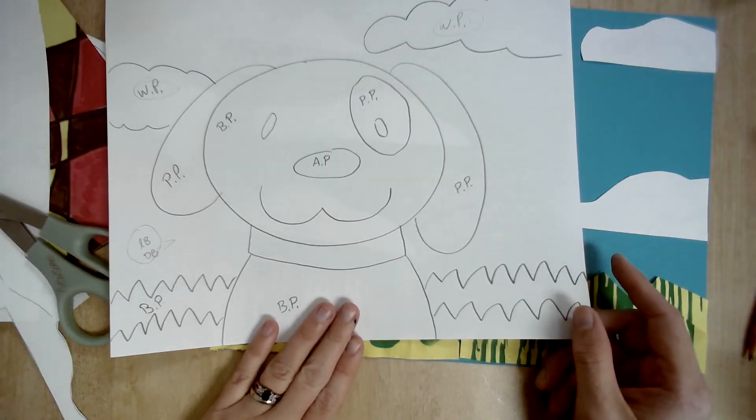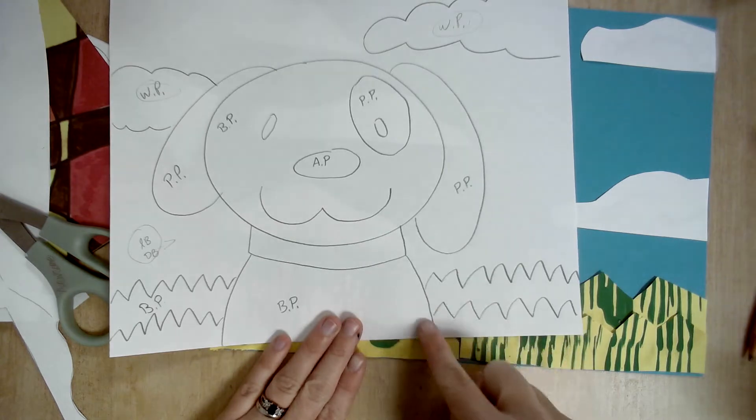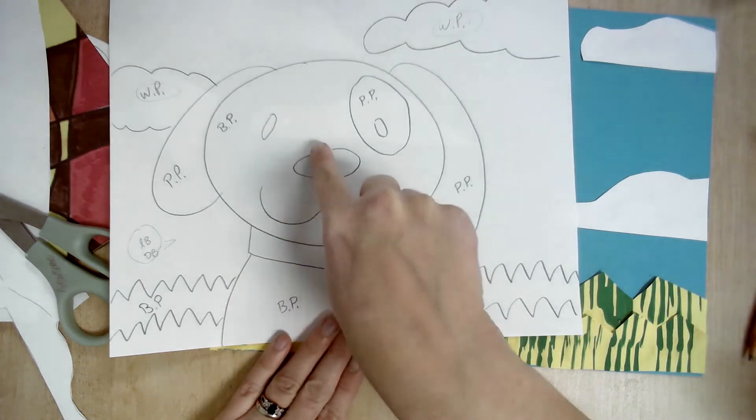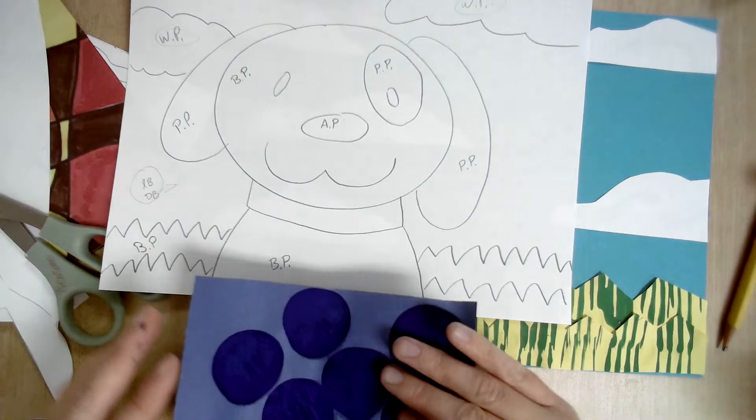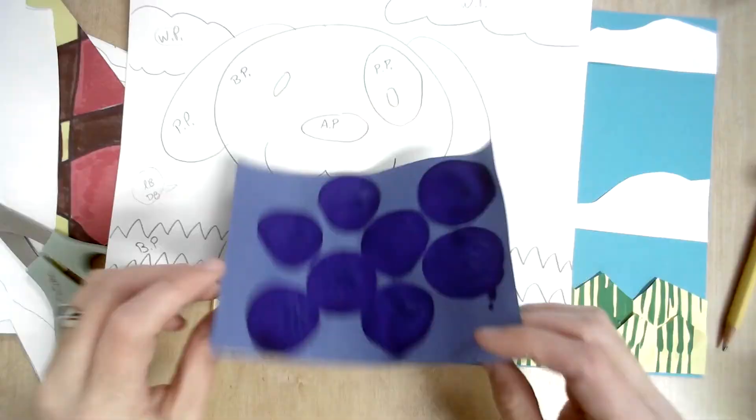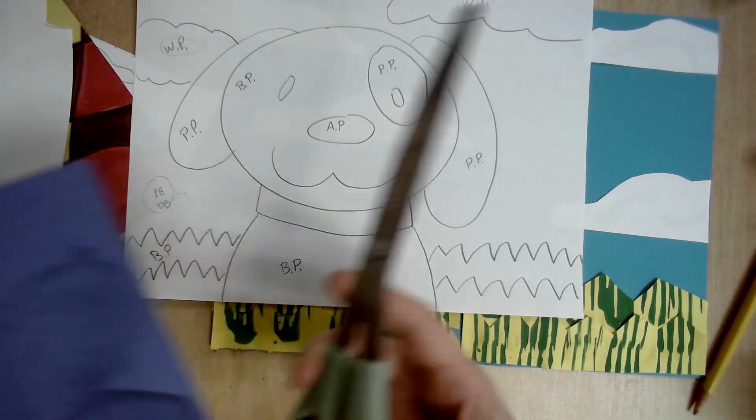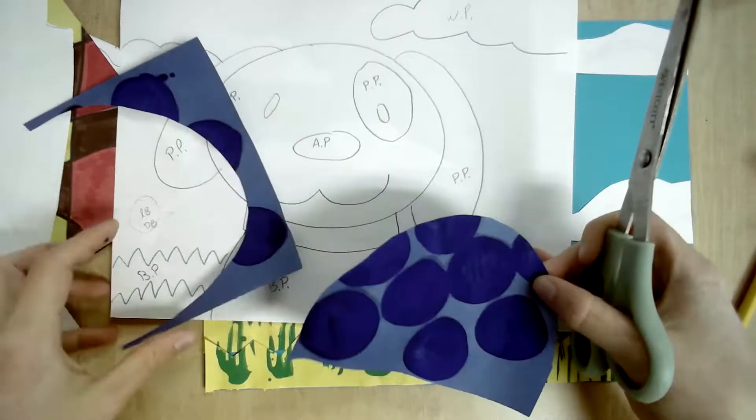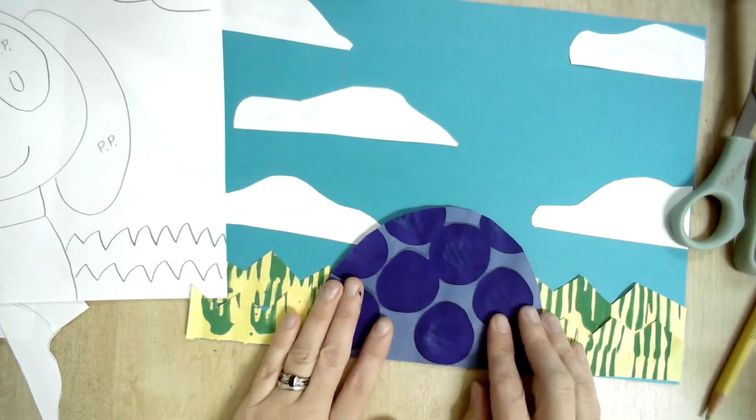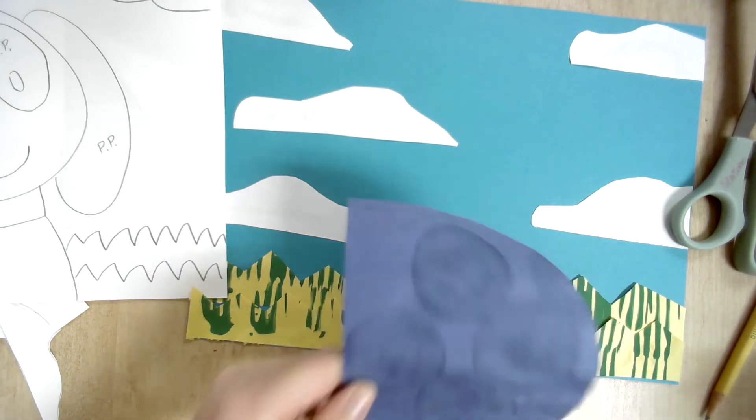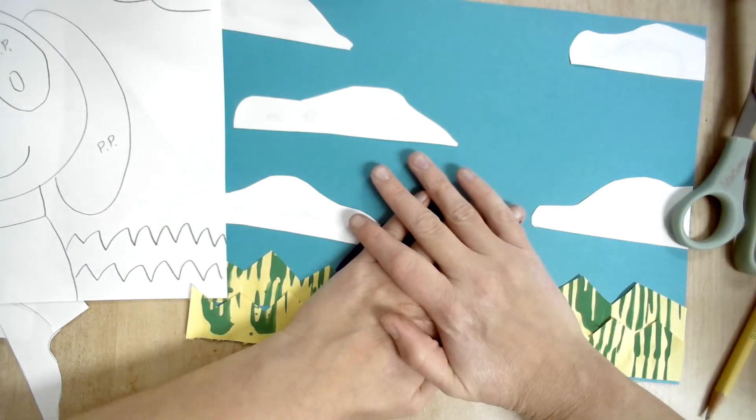So the thing that's next in the background would be the dog's body because it's going to go behind the other shapes. So I'm kind of gauging how big it's going to be by looking at my original paper. And I can always draw on the back with a pencil to help me out and then cut it out. I lay it out to a spot I'm happy with and then I'm going to add my glue. Hold it down for 10 seconds.